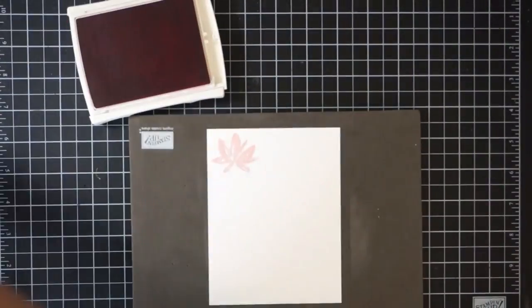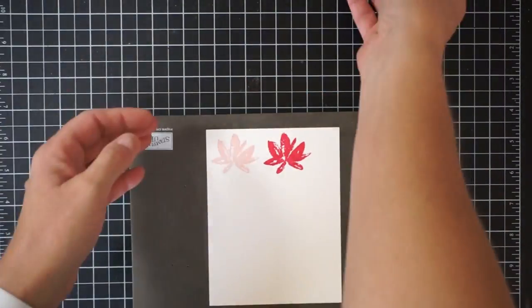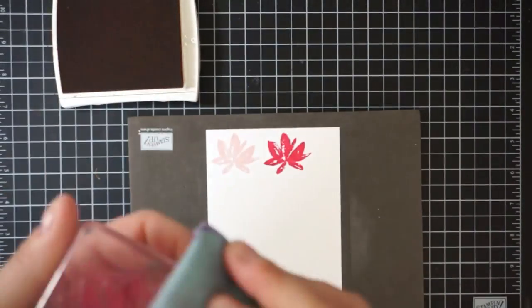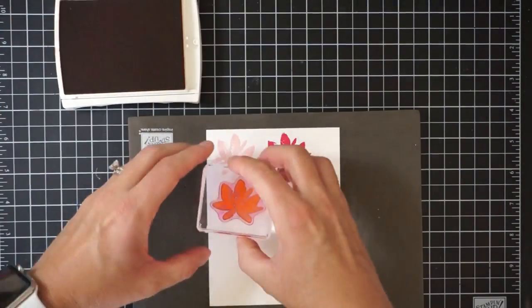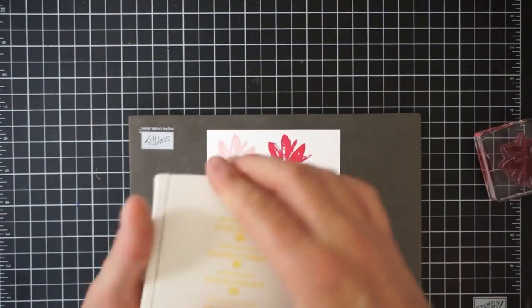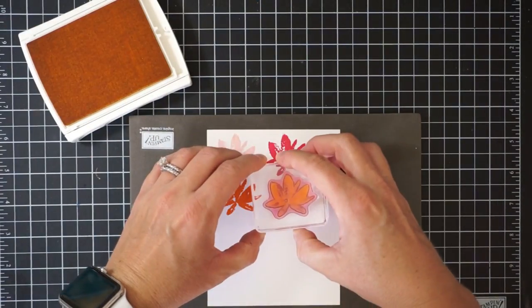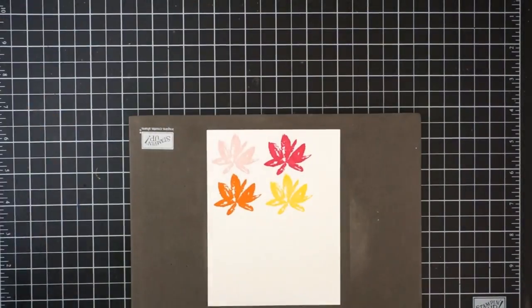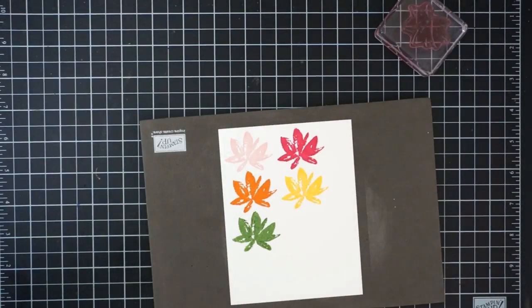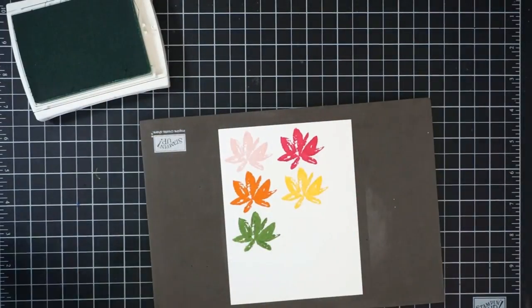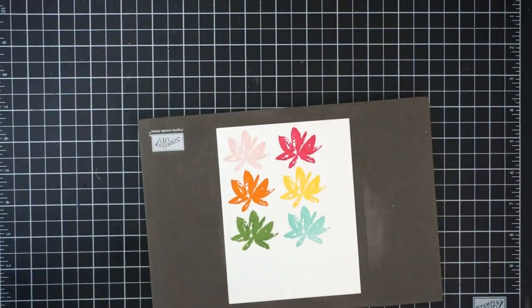I'm not going to bore you with real time so I've sped it up here. In total I think I used nine colors - I started with Blushing Bride, went to Melon Mambo, and I am cleaning my stamps in between each color so I don't get any color contamination. Then I moved on to Pumpkin Pie, Daffodil Delight, Wild Wasabi for the green, and then the blues - Pool Party, Dapper Denim, and Wisteria Wonder for the purple.